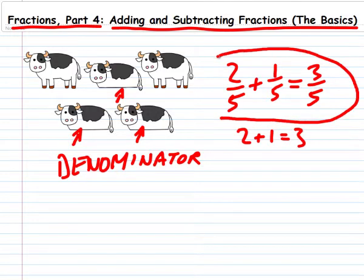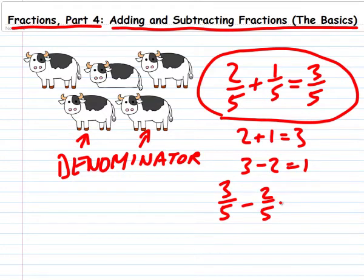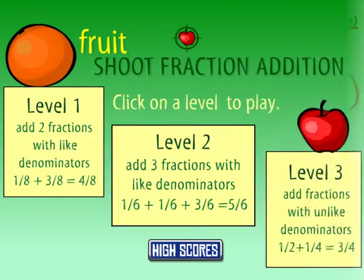And if two cows stand back up, you can subtract them in just the same way. Three cows minus two cows equals one cow. Or three-fifths of the herd minus two-fifths equals one-fifth.